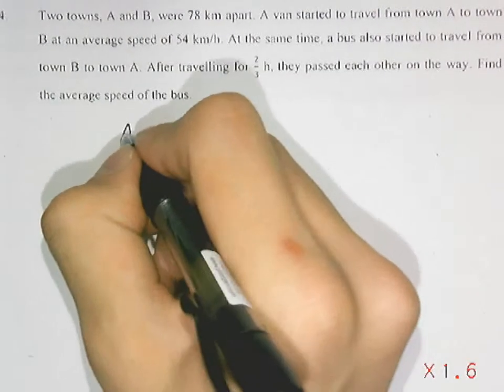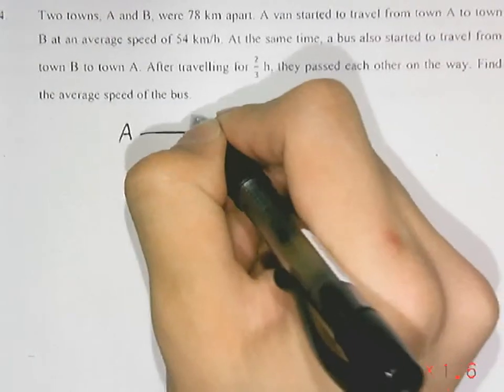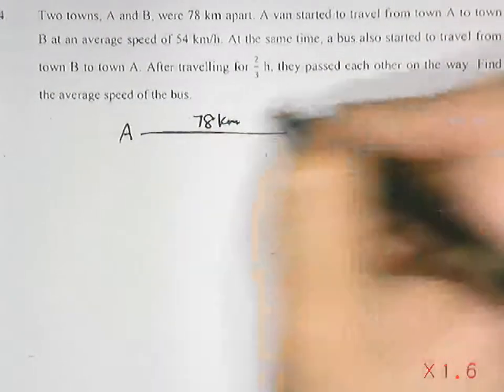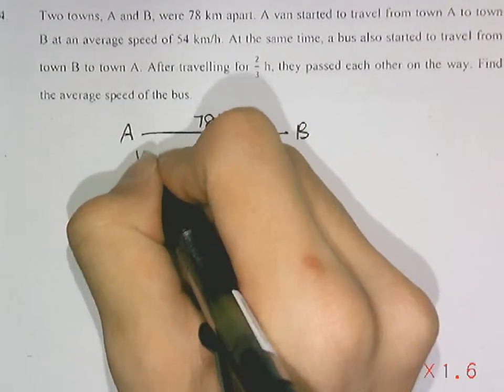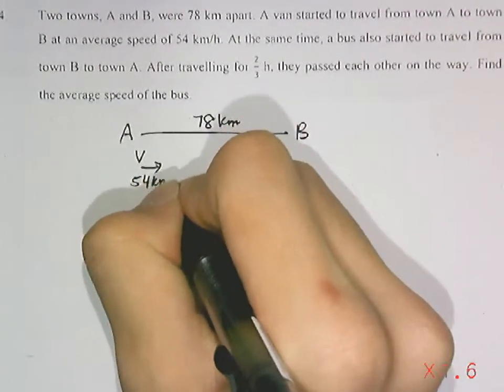Two towns, A and B, are 78km apart. A van travels from A to B at an average speed of 54km per hour.